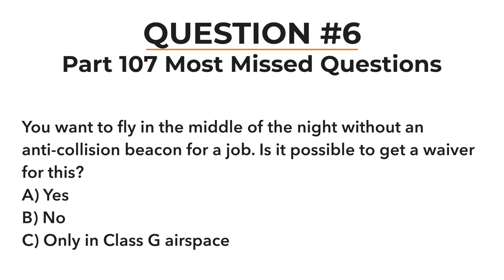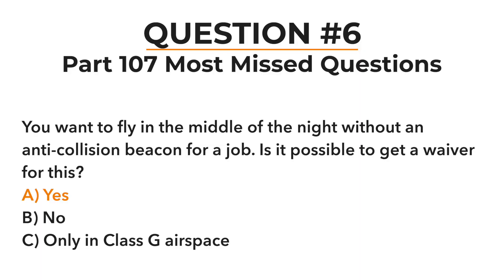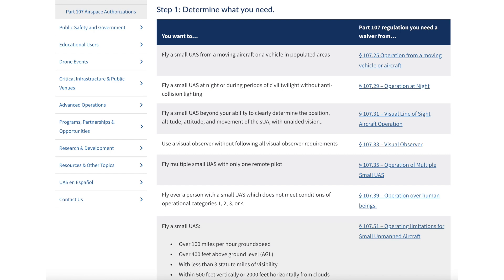Number six has to do with waivers. You want to fly in the middle of the night without an anti-collision beacon for a job — is it possible to get a waiver? Having an anti-collision beacon is a requirement for flying at night; however, many operational requirements can be waived by the FAA. As long as you can show the FAA a risk management plan and an operational necessity — to operate without a beacon, exceed the speed limit, or similar — they can issue a waiver. The link in the description shows the full waiver request process and which operational rules can be waived.